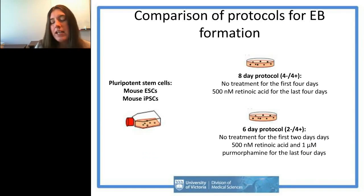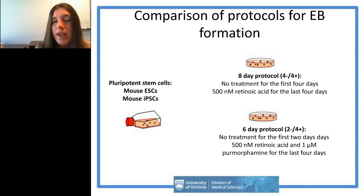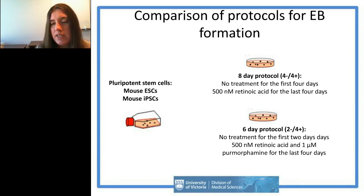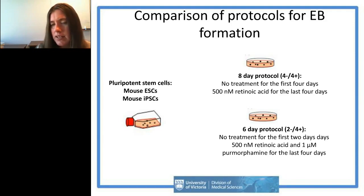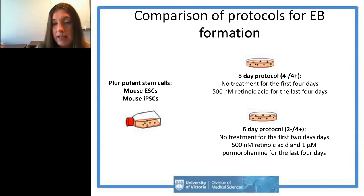The work I'll be talking about today involves finding a more effective way to generate neurons, with an emphasis on motor neurons. We compared two different protocols. The embryoid body formation protocol using retinoic acid, originally from Bain et al. in 1998, cultures mouse pluripotent stem cells for eight days: four days for aggregate formation, then four days of retinoic acid treatment.